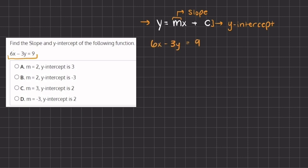In order to find our y-intercept, that is where our linear function crosses the x-axis, so where our function crosses the x-axis the x value is going to equal 0. We can set x to equal 0 and then find the y-intercept. This term cancels out and we are left with negative 3y equals 9. To isolate y, we divide negative 3 on both sides, so our y-intercept equals positive 9 divided by negative 3, which gives us negative 3.